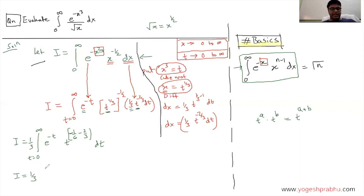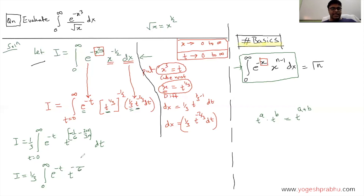Writing it more neatly: I equals 1 by 3 times the integral from 0 to infinity of e raised to minus t times t raised to the power minus 1 by 6 minus 2 by 3. Simplifying with a common denominator of 6: minus 1 by 6 minus 4 by 6 gives minus 5 by 6. So the power of t is minus 5 by 6, and we have dt.